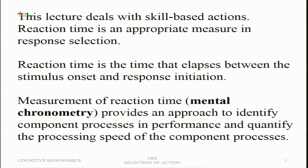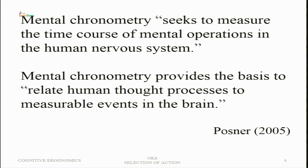Chronometry means measurement of time. Mental chronometry is the time course of information flow through the nervous system, and therefore speed becomes important. On the basis of reaction time we can identify component processes and quantify exactly how much time each component takes. Mental chronometry provides the basis to relate human thought processes to measurable events in the brain — from behavioral studies of reaction time, one can relate that to what is going on in the brain.